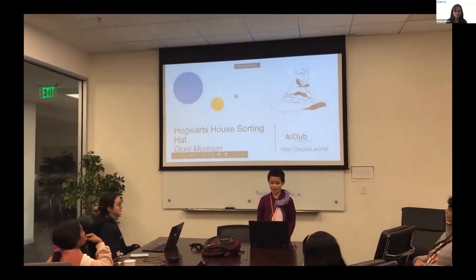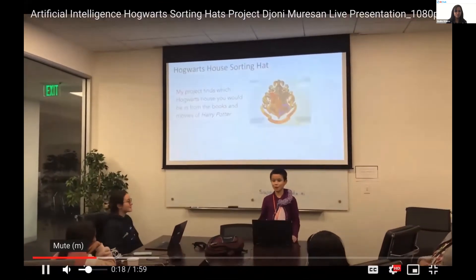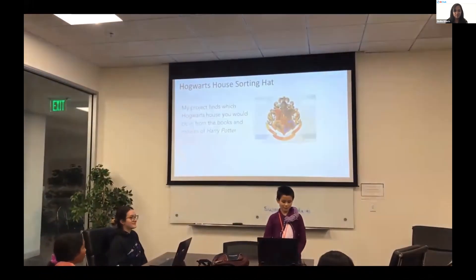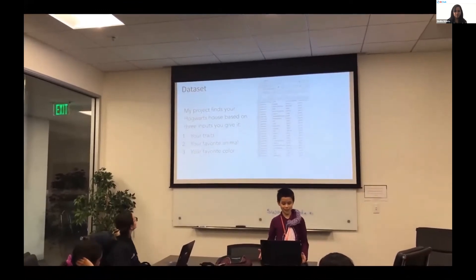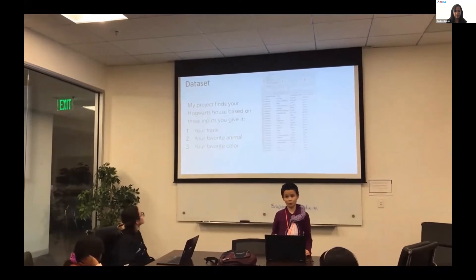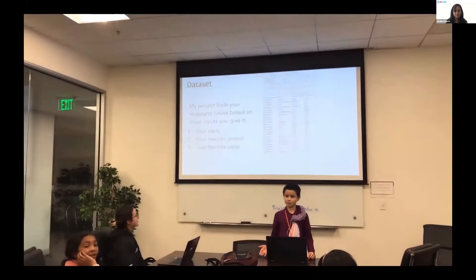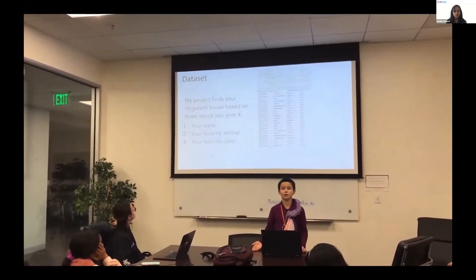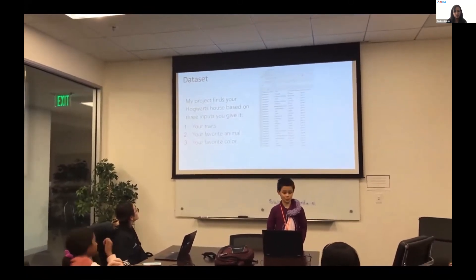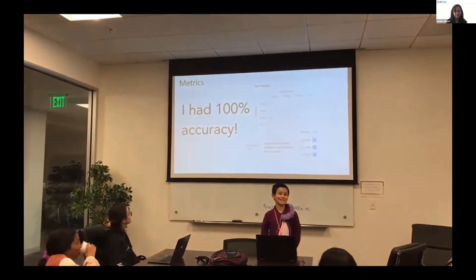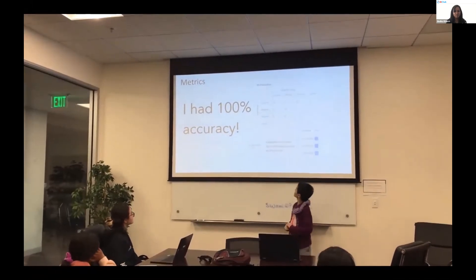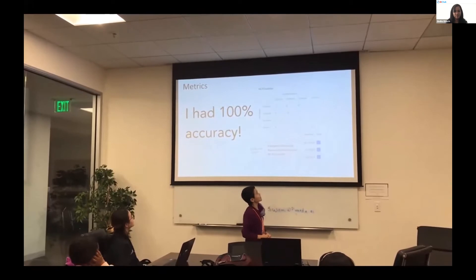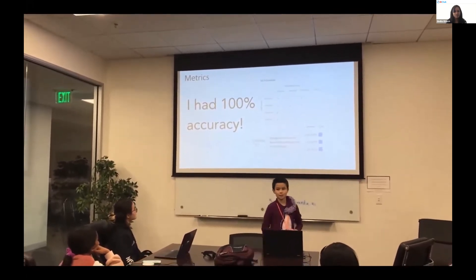Hello everyone, I'm Johnny. I made my project to see what house you would be in if you went to the Hogwarts House of Witchcraft and Wizardry from the Harry Potter series. My project says what house you're in depending on three inputs that you give it: your traits, so whether you're kind, whether you're evil, whether you're short or tall; your favorite animal, because during the series there are many animals that one house specifically favored over another; and your favorite color, because in the books one certain house was given a certain color as their house color. I had 100% accuracy — I had 100% in the Naive Bayes classifier, the random forest classifier, and the MLP classifier. In the confusion matrix it's all balanced out, and my data set wasn't too biased to one house or another.